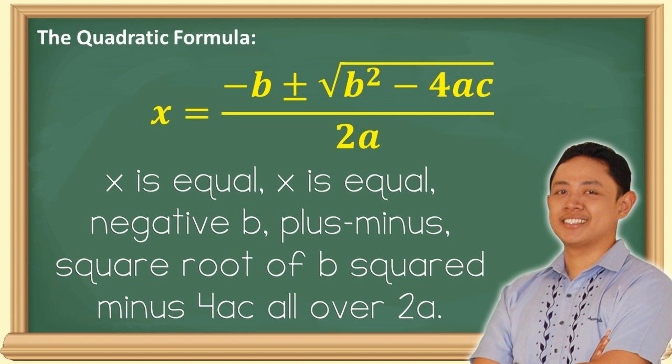Let's make it slower. x is equal, x is equal, negative b plus minus square root of b squared minus 4ac, all over 2a.